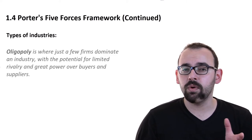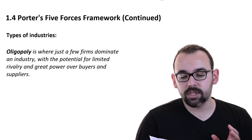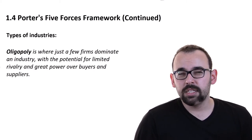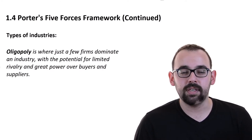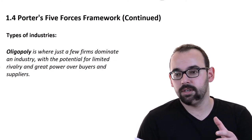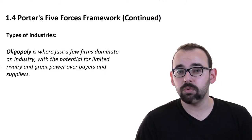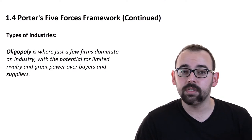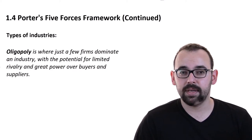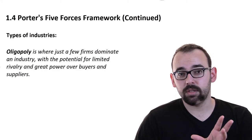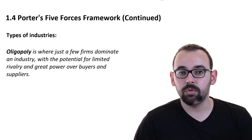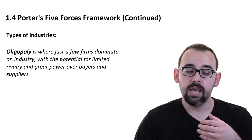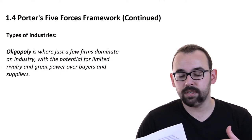Secondly, we have oligopoly, which is quite similar to monopoly. In an oligopolistic market, just a few firms dominate an industry with the potential for limited rivalry and great power over buyers and suppliers. From a buyer's perspective, there still isn't much choice — if you have just three players offering a product or service, you have very limited options. For a firm wanting to enter the market, there is a bit more space than in a monopolistic market, but it heavily depends on how the dominant players behave. If they decide to compete with each other, industry profitability decreases a lot as they spend resources competing and sacrifice margins.